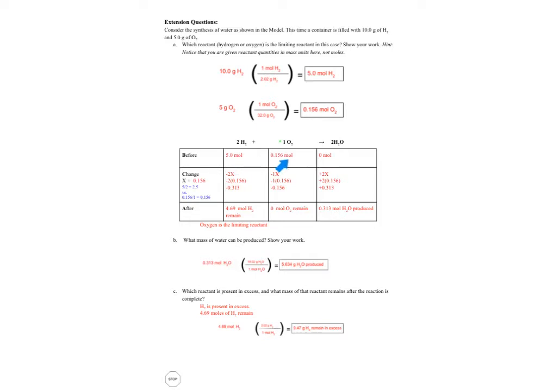So now that we're in moles, we can actually do our BCA table. I don't have any of my H2O to start. So I have this before and this before, right? Like when you take the ingredients out of your pantry before you start baking, that's what we have to start, but no cookies yet.